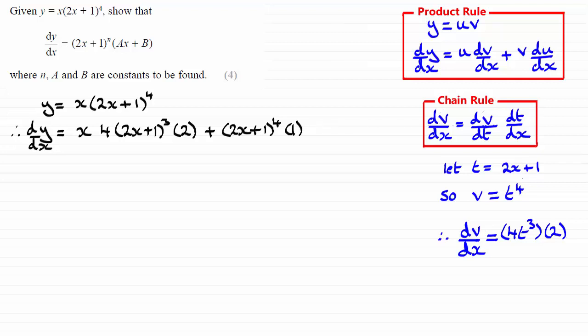So, all we need to do now is just tidy this up. And if we tidy this up, you end up with this line here. 8x times 2x plus 1 all cubed for this first term. And then this is just going to be 2x plus 1 all to the power 4.